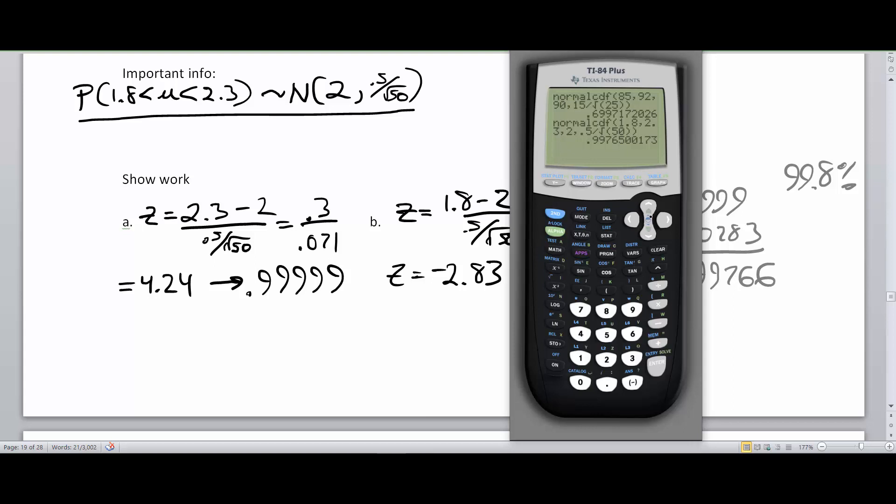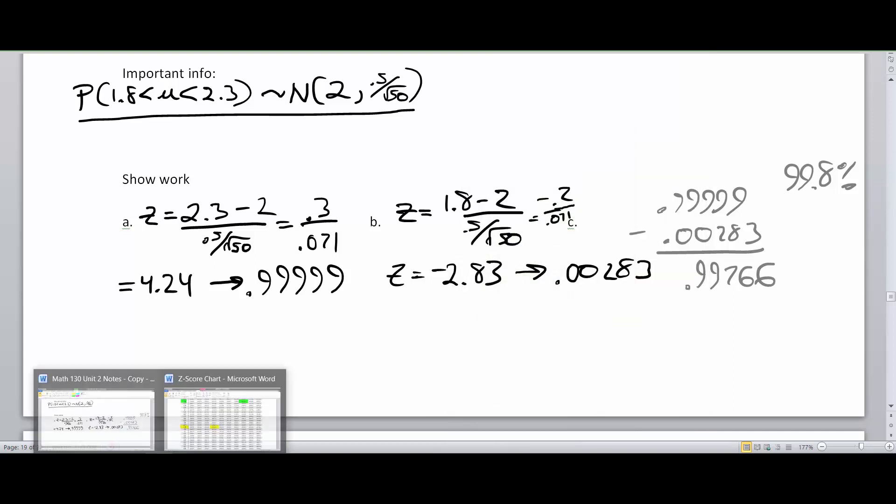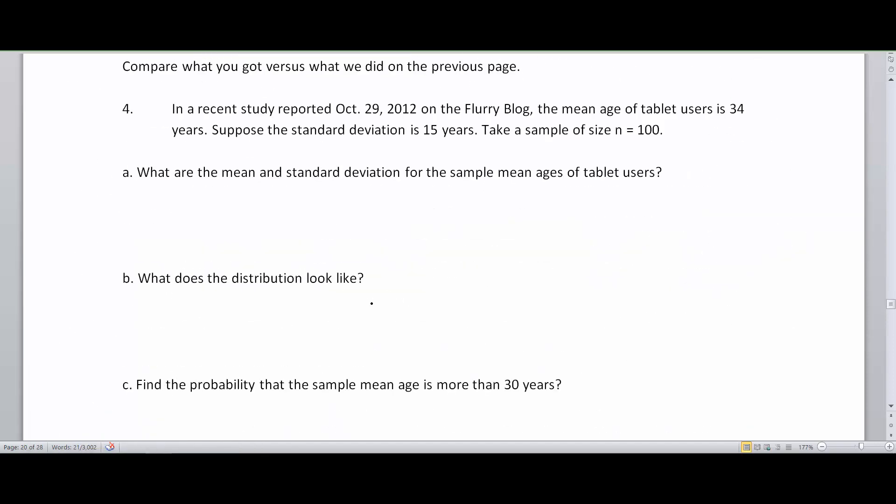We now are moving on to the rest of this worksheet with a quick example. We're going to do this all in the calculator, but I will have some cool techniques to show you here. We have this something called the FlurryBlog, that the average mean of tablet users is 34 years. So a 34-year-old person is the average person who uses a tablet. I'm sure that is skewing younger now, and the standard deviation here is 15 years. And look at that sample size.